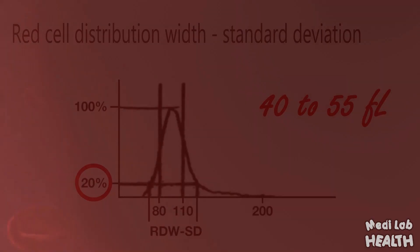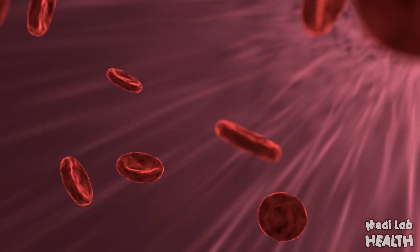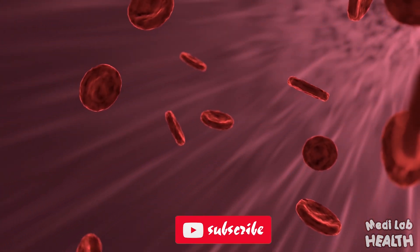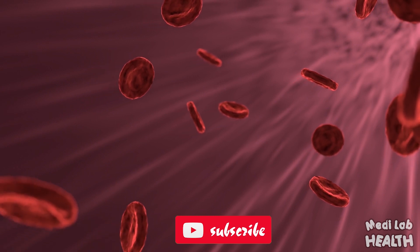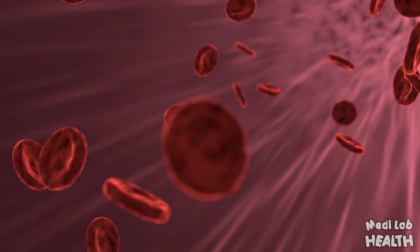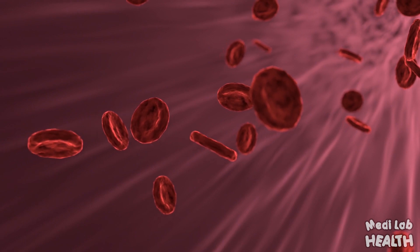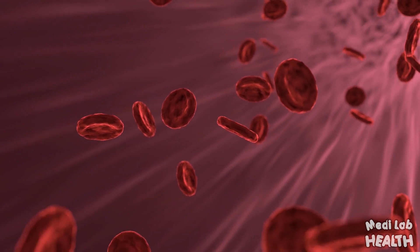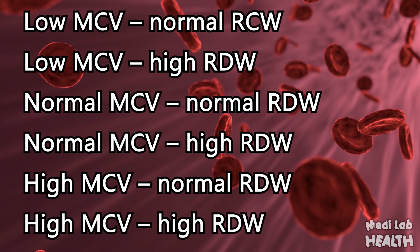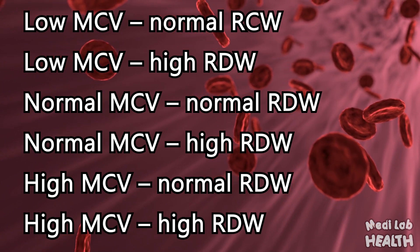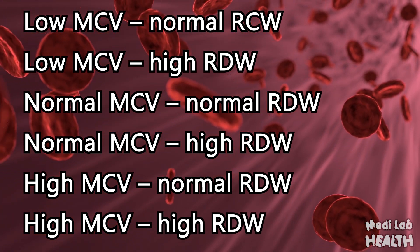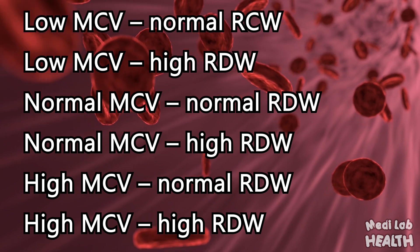The RDW is used along with the red cell indices to describe a population of red blood cells. The RDW test is commonly used to diagnose anemia, a condition in which red blood cells can't carry enough oxygen to the rest of the body. These are the most possible six combinations of red cell distribution width with MCV that classify almost all major possible causes of anemia.